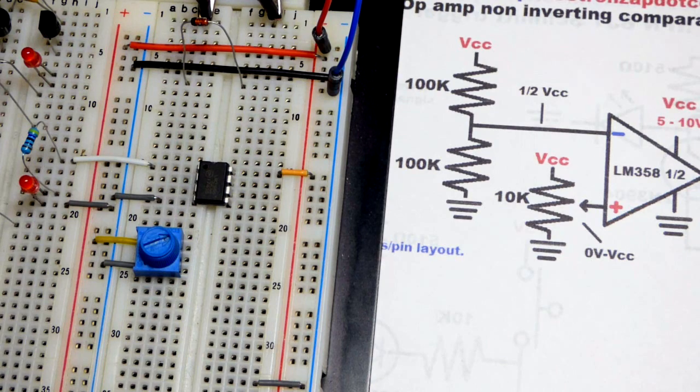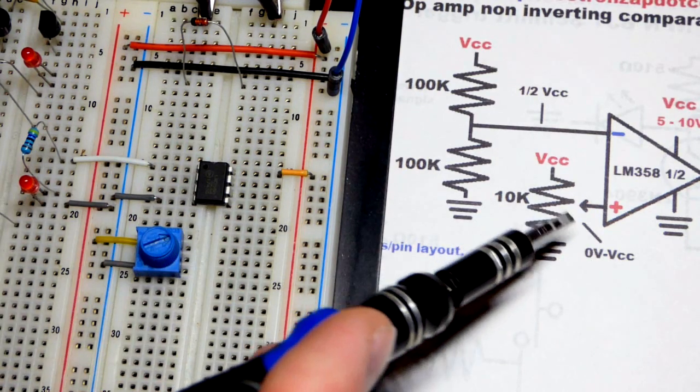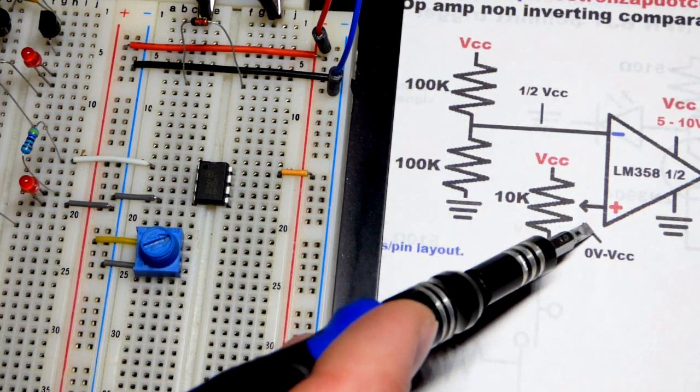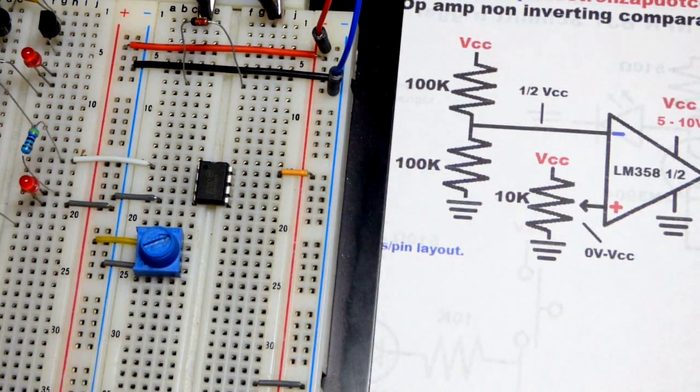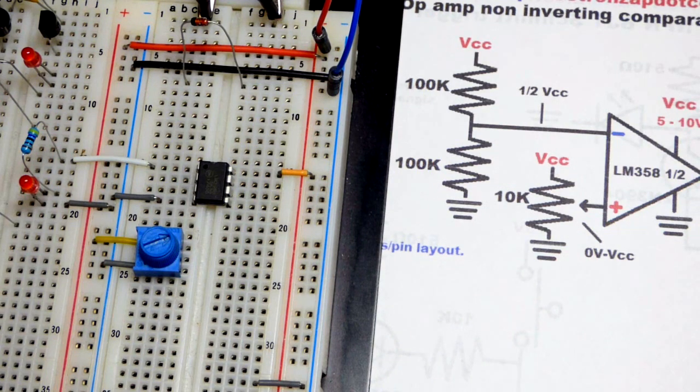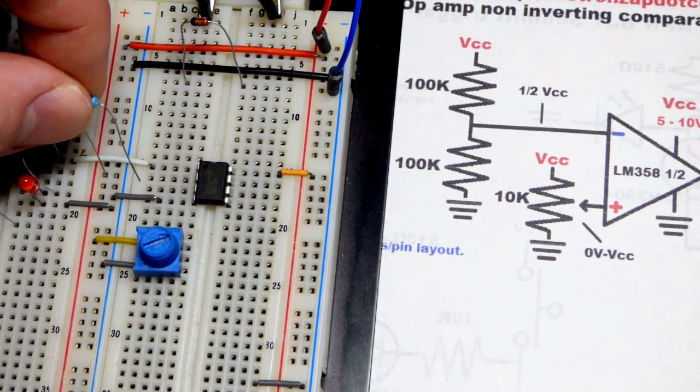And so that would be the topic for other videos. Now, we're just looking at if the non-inverting input is lower than the inverting input, the output will be low. If it's higher, the output will be high. Just to make this simple, we're going to take two 100 kilo-ohm resistors.